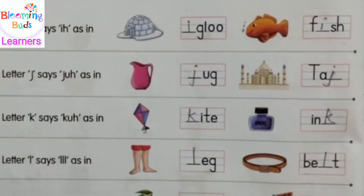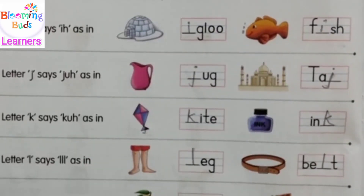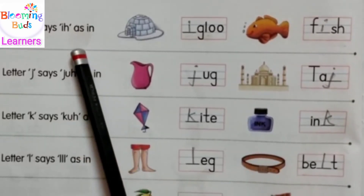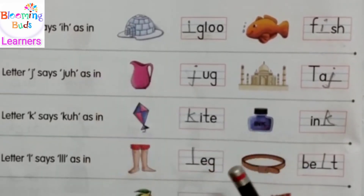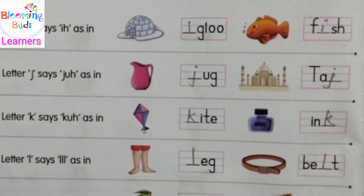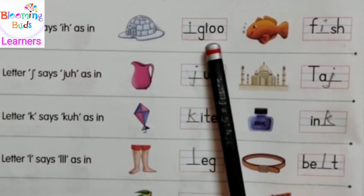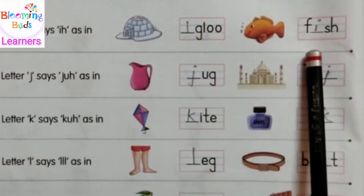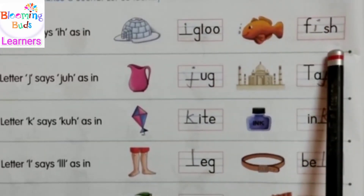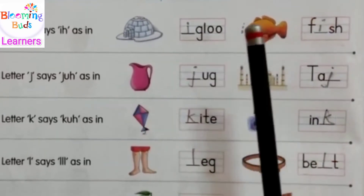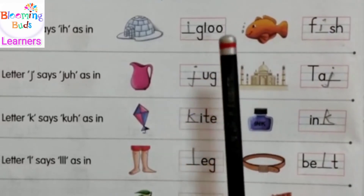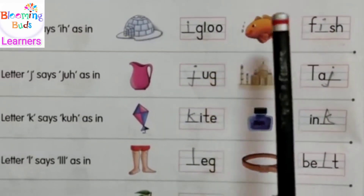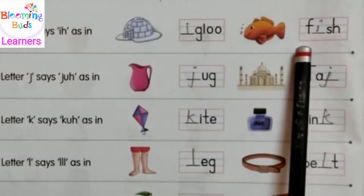Now the sound of letter I says 'e', like a short 'e' sound. As in igloo, igloo. Fish, fish. Can you hear the 'e' sound in it? Yes — igloo, fish.